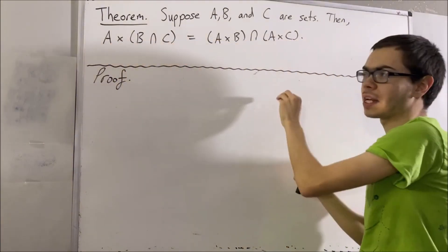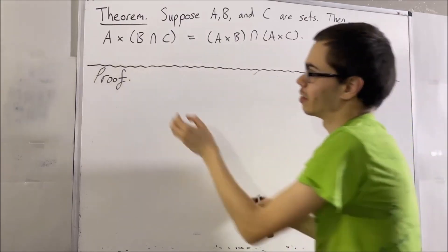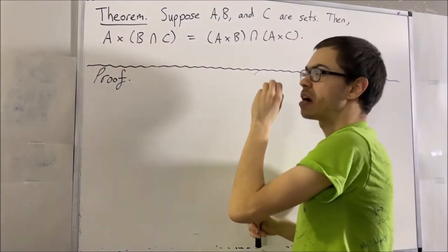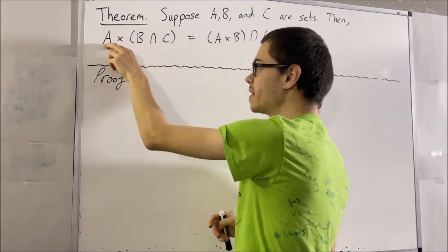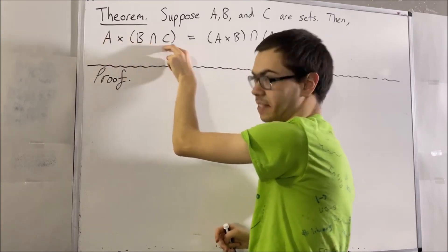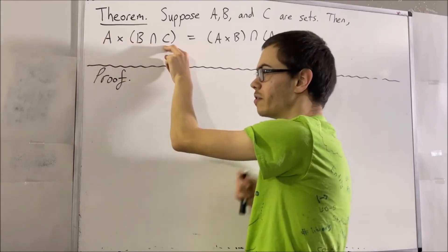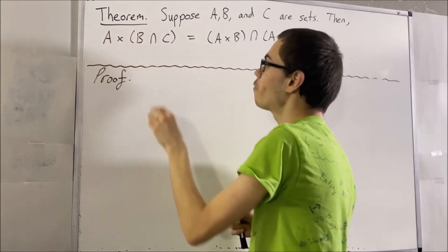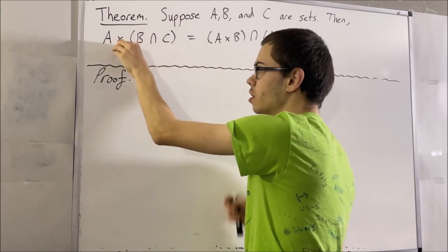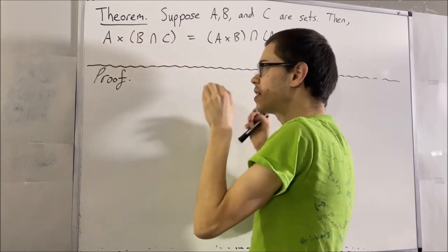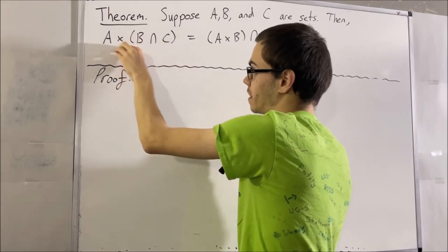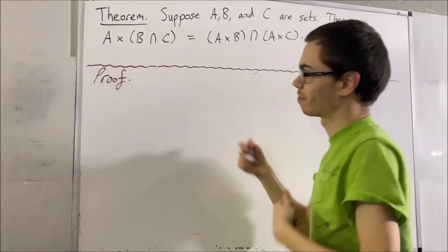To do that, let's consider an arbitrary element in this set. Now notice, because this set is a Cartesian product of two sets, that means every element of this set is an ordered pair. So let me consider an arbitrary ordered pair of this set. I'll call it X comma Y.